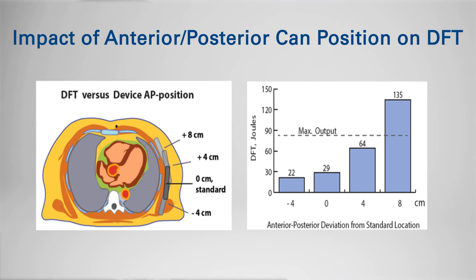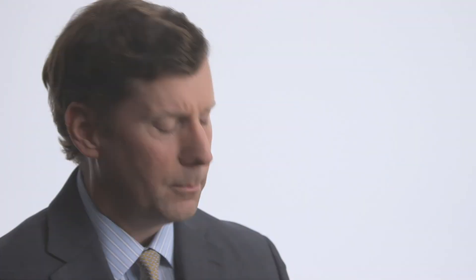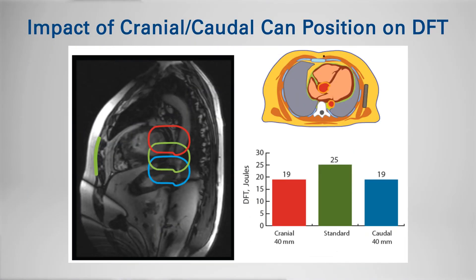Moving the can eight centimeters anterior — a full can anterior, which is quite an anterior position — took the defibrillation threshold above 100 joules, above the anticipated maximum energy for the device. The model also looked at cranial or caudal can position and found that, unlike anterior-posterior where there was a big difference, cranial-caudal movement of at least four centimeters in either direction had negligible impact on defibrillation threshold. Anterior-posterior position impacted a lot; cranial-caudal did not.